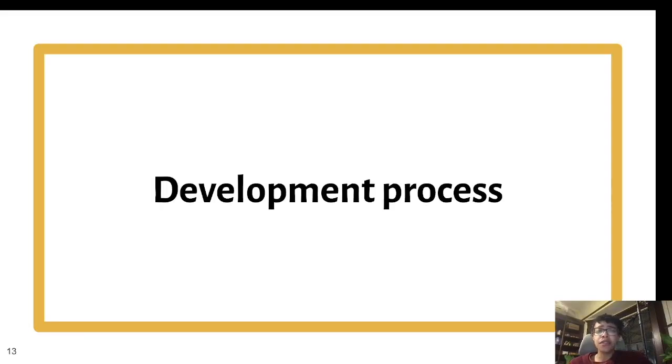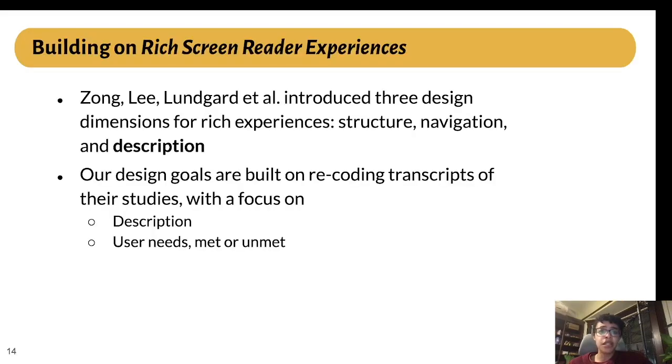How do we learn all of these facts about users' preferences, and where did these design goals come from? We started our process by building on the work done by Zong, Li, Lungard et al. In their paper, Rich Screen Reader Experiences for Accessible Data Visualization. This paper introduced three design dimensions for screen reader accessibility: structure, navigation, and description. OLLI's navigable hierarchies incorporate all three of these dimensions. In building out customization, we focused on description in particular. We went back through transcripts from their user study and recoded them, looking at user needs around descriptions and how existing options met or didn't meet them. We then developed our design goals through an informal, iterative process focused on those needs.